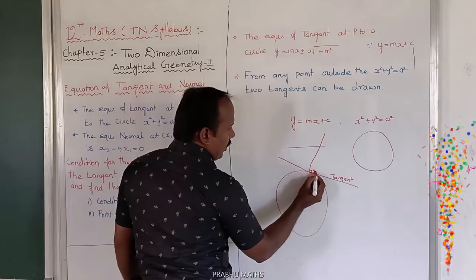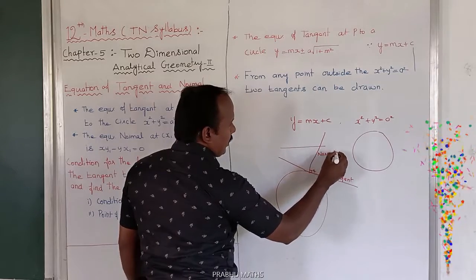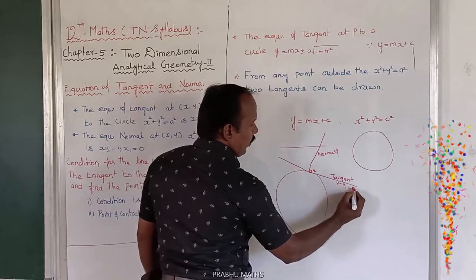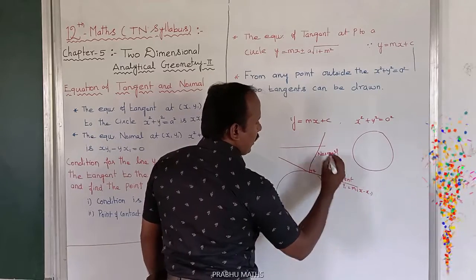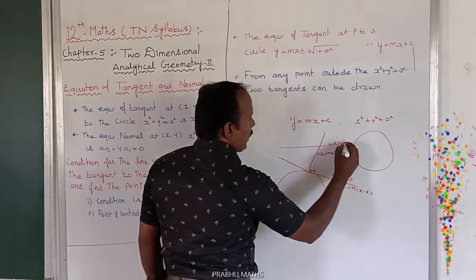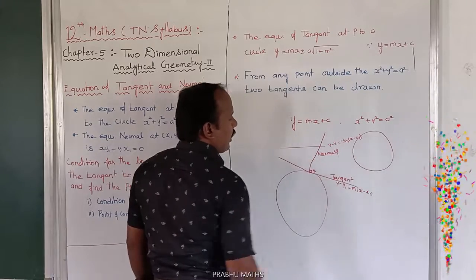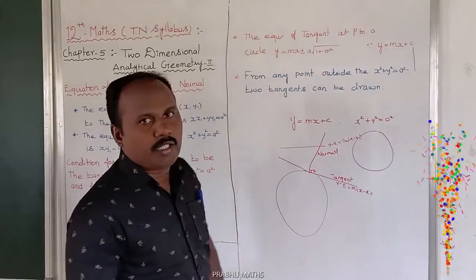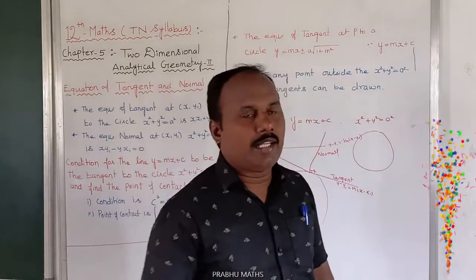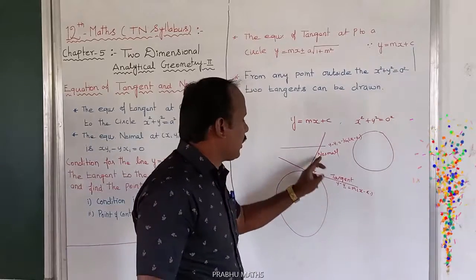The normal equation is y - y1 = m(x - x1), and the tangent normal relation is: y - y1 = (-1/m)(x - x1). So the tangent and normal equations have a perpendicular, 90-degree relationship to each other.